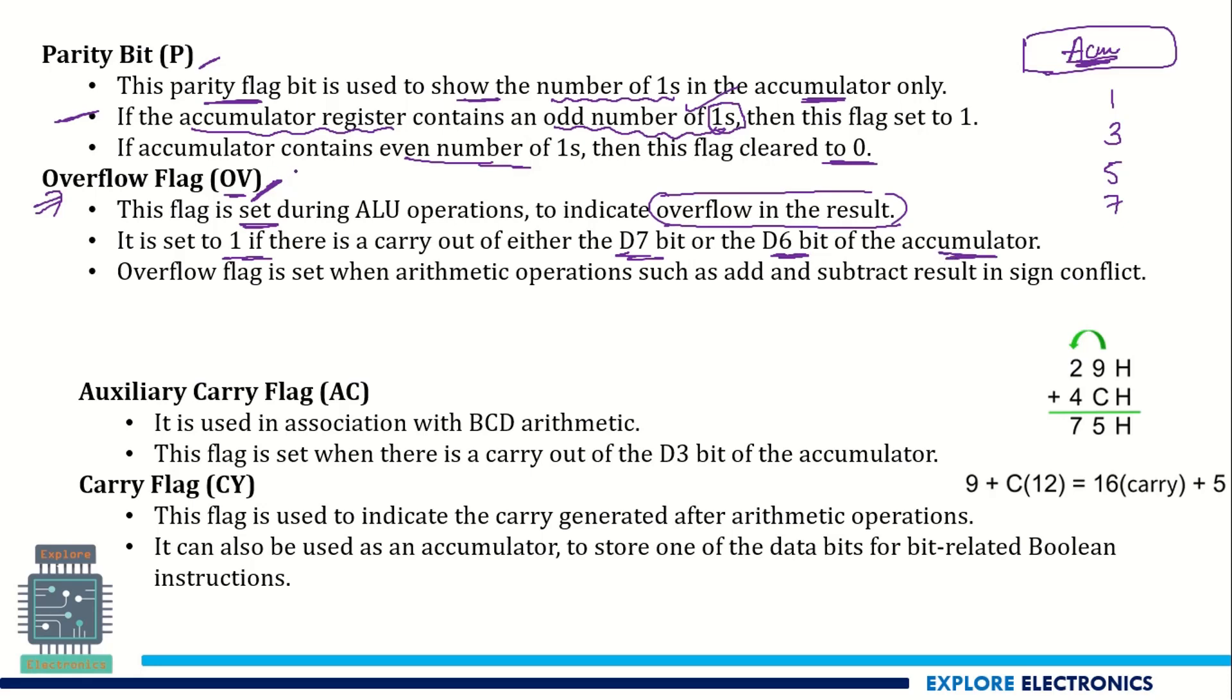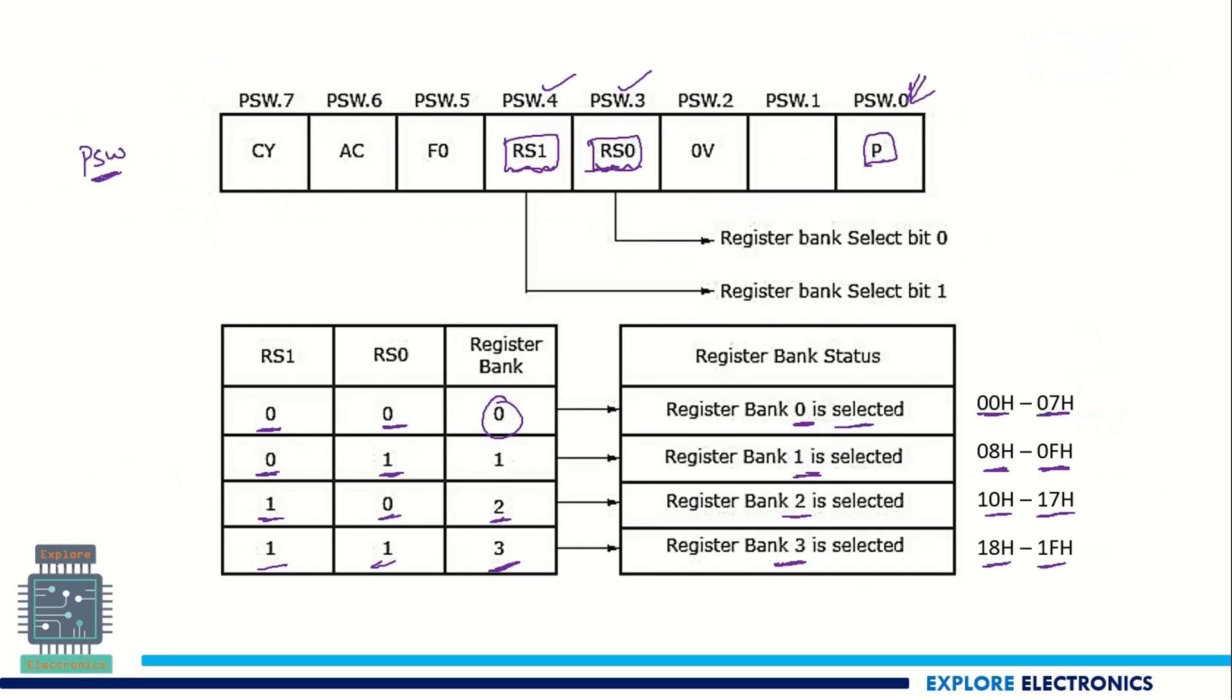So this is set to 1 if there is a carry out of either D7 bit or D6 bit of the accumulator. This is the indication there is an extra bit output. That is the overflow of accumulator we say. So the overflow result will be indicated by the OV flag. So this bit indicates the overflow.